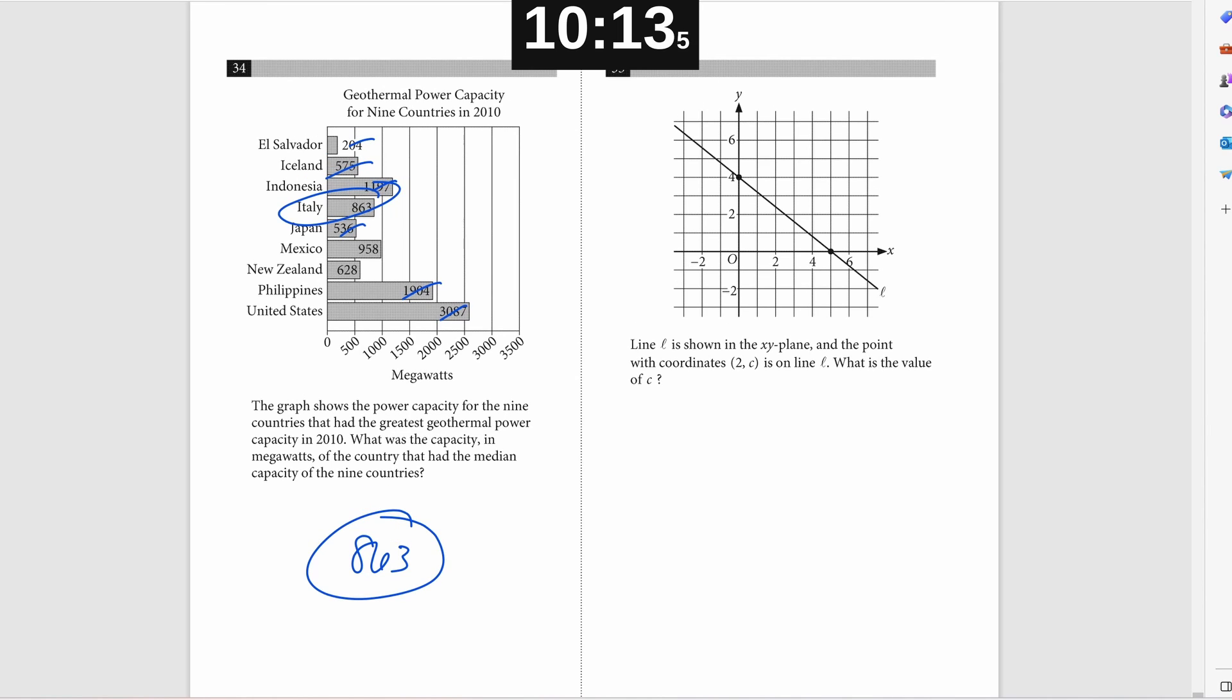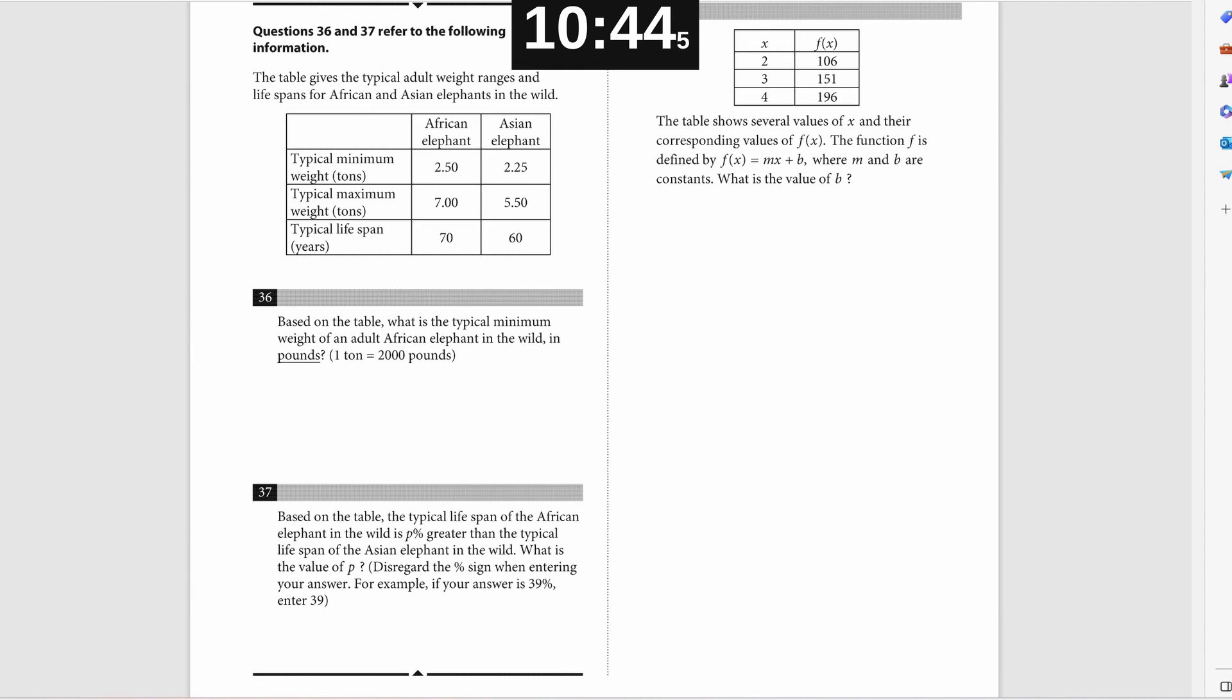Problem number 35. They give you the Y intercept of four and a slope of negative four fifths when you do change of Y over change in X. There's a negative slope. So then I'm just plugging in for Y equals MX plus B. I'm doing C equals negative four fifths times two plus four, right. Plugging in the X that we're given and the M and B that we solved for and then doing some algebra and that gets 12 fifths for C. Problem number 36. You're asked for the typical minimum weight of an adult African elephant in pounds. That's just a simple conversion. It tells you it's 2.5 in tons, 2.5 times 2000 gives you the amount in pounds and that's going to be 5,000 pounds. Problem number 37, it's getting at a percentage for lifespan. So you just want to do the ratio of lifespan 70 divided by 60. That gives you the percent that you need to increase 60 by in order to get 70.